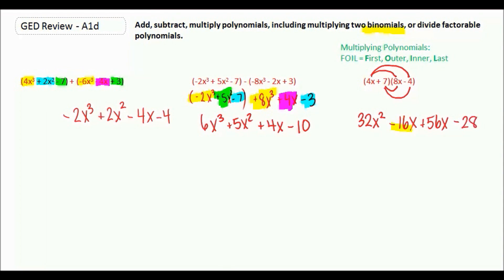Really what we have to do now is combine our two middle terms. So we just bring down our 32x squared. Negative 16x plus 56x is positive 40x. And then minus 28.